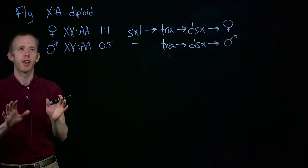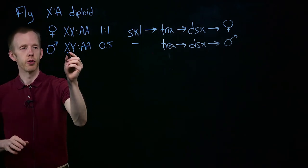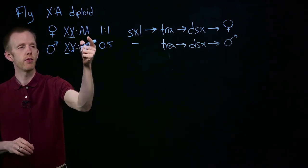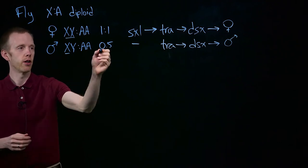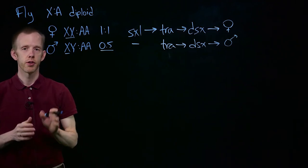So in sum, in flies, it's the number of X chromosomes relative to the number of autosomes, this ratio, that controls sex.